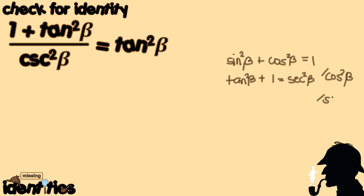We could also divide the first Pythagorean identity by sine squared beta: sine squared beta over sine squared beta is 1, plus cosine squared beta divided by sine squared beta is cotangent squared beta, equal to 1 over sine squared beta, which is cosecant squared beta.